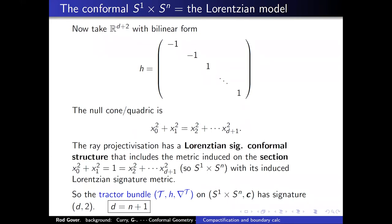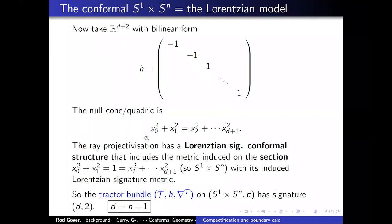That was the Riemannian signature model. For the Lorentzian case: if you take R^{D+2} with a bilinear form of signature (D,2), then you get a quadric and its ray projectivization is S^1 cross S^N (recall D is N plus one). That has a Lorentzian-signature conformal structure, and it's conformally flat — the reason being that the tractor connection is flat.